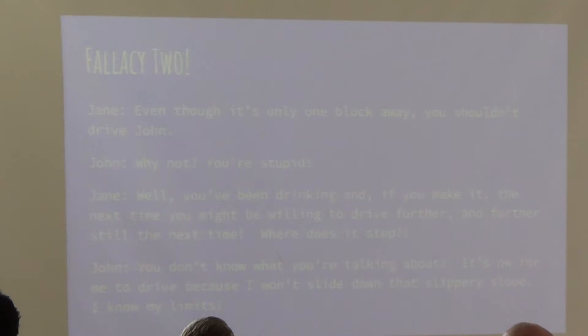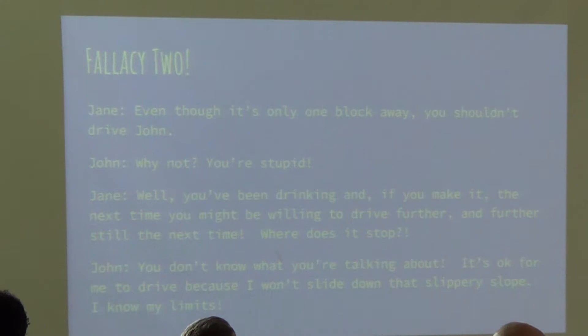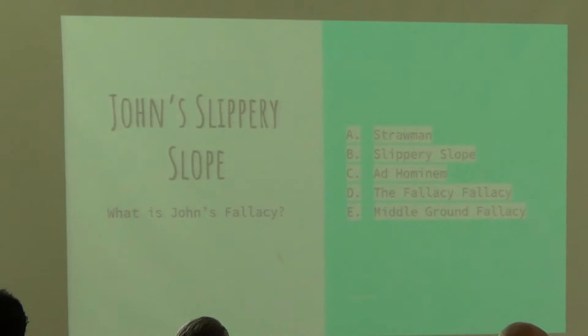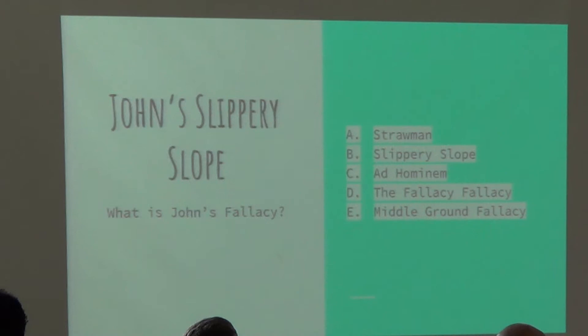Fallacy number two. Jane: 'Even though it's only one block away, you shouldn't drive, John.' John: 'Why not? You're stupid.' Jane: 'You've been drinking, and if you make it this time, the next time you might be willing to drive further and further still. Where does it stop?' John: 'You don't know what you're talking about. It's okay for me to drive because I won't slide down that slippery slope — I know my limits.' What is John's fallacy? The answer: slippery slope. John is accusing Jane of the slippery slope fallacy — arguing that allowing A to happen guarantees Z will happen, therefore don't allow A.